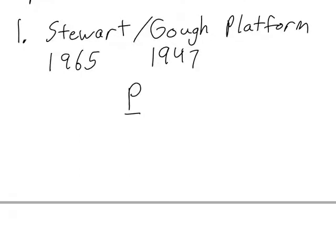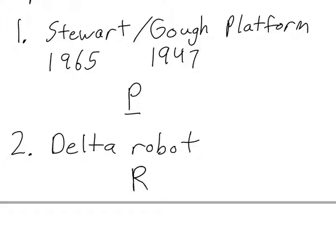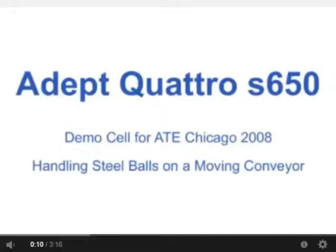The second type of common parallel manipulator is called the delta robot. The delta robot is characterized by having each of its actuated joints be revolute joints. Let's take a look at a delta robot.